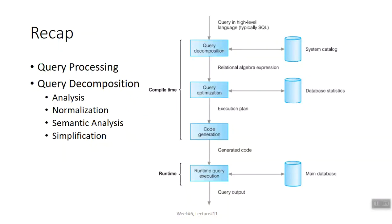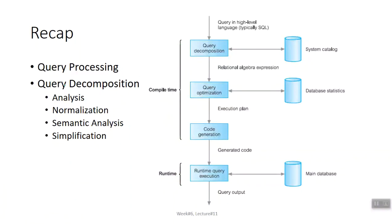Previous lecture mein humne query processing ko study kiya tha. Query processing basically ek aisi activity hai jisme chaar cheezein hoti hain: decomposition, query optimization, code generation, aur query execution. Yeh chaar steps query processing mein lazmi hoti hain. Ab query processing ki pehli step — decomposition — is further divided into four sub-steps: analysis, normalization, semantic analysis, and simplification.